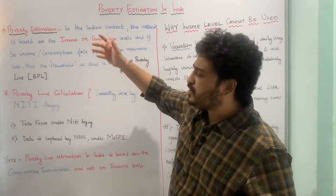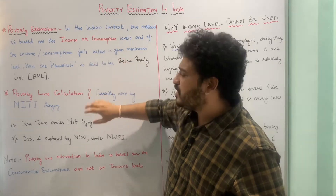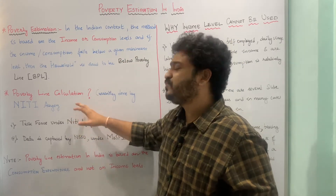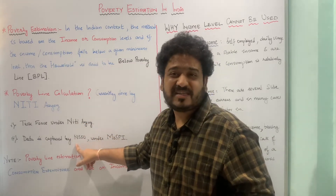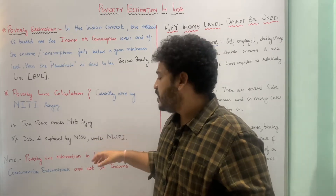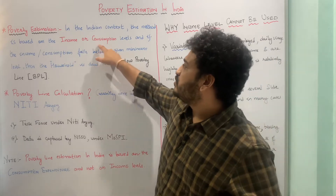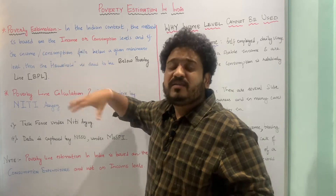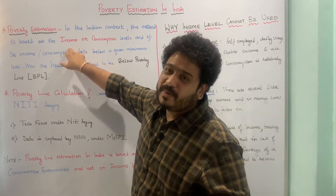To summarize: poverty estimation can be done using either income or consumption. In India, it is done by NITI Aayog, through a task force that draws data from the National Sample Survey Organization under the Ministry of Statistics and Programme Implementation. Importantly, India uses consumption levels — not income — to estimate poverty, and the next question is: why is income not being used?